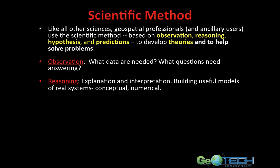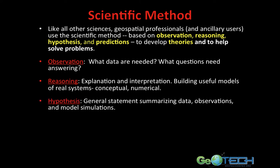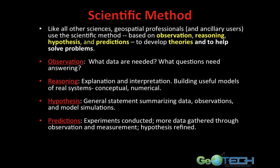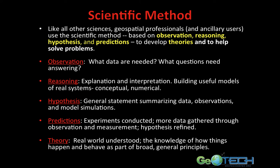We then create hypotheses — a general statement summarizing the observed data and the model simulations. In the scientific method, there must be observation, there must be reasoning, and from those we can create a hypothesis. From that hypothesis, via experiments conducted, we can create predictions. The more data gathered through observation and measurement, the more refined the hypothesis becomes, which could ultimately lead to theory. A theory then becomes a real-world understanding of an event — it's the knowledge of how things happen and behave as part of broad, general principles. The scientific method is a continual process of observing, asking questions, trying to answer them, collecting more data, and trying to solve problems to the best of our ability.